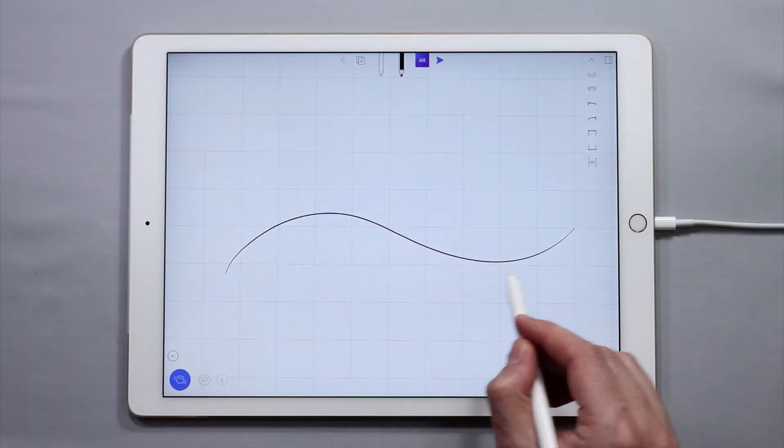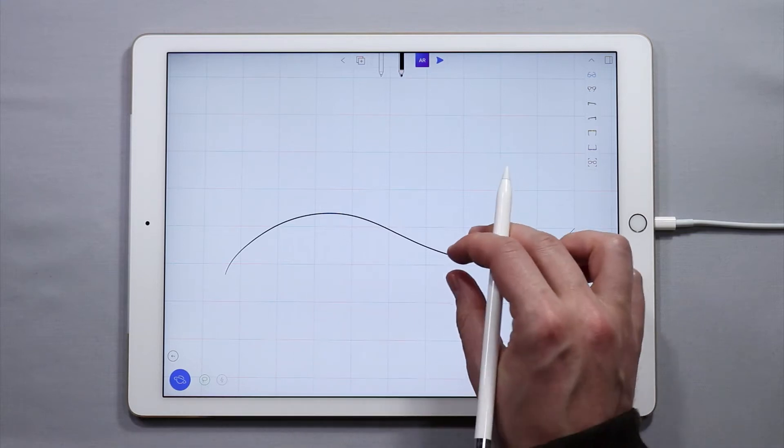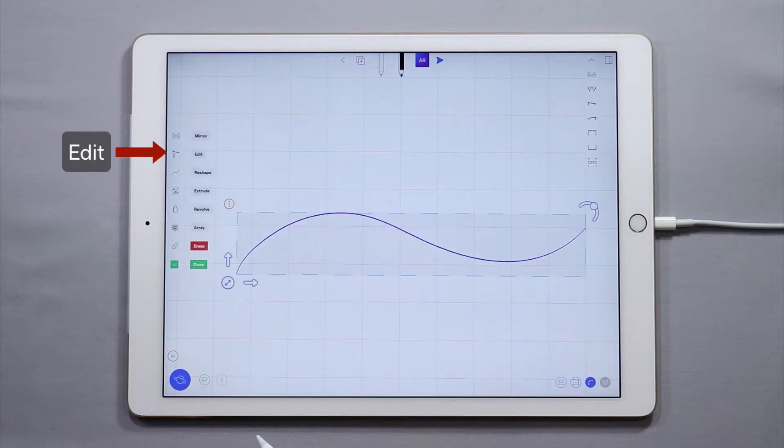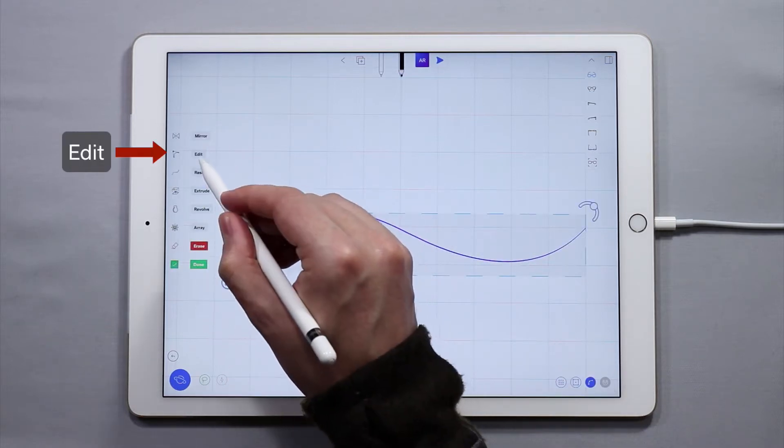You see here that I have a curve that I've just sketched and let's edit it. To do this I'm going to double tap to select the curve and then I'm going to come over to the side menu and tap edit.